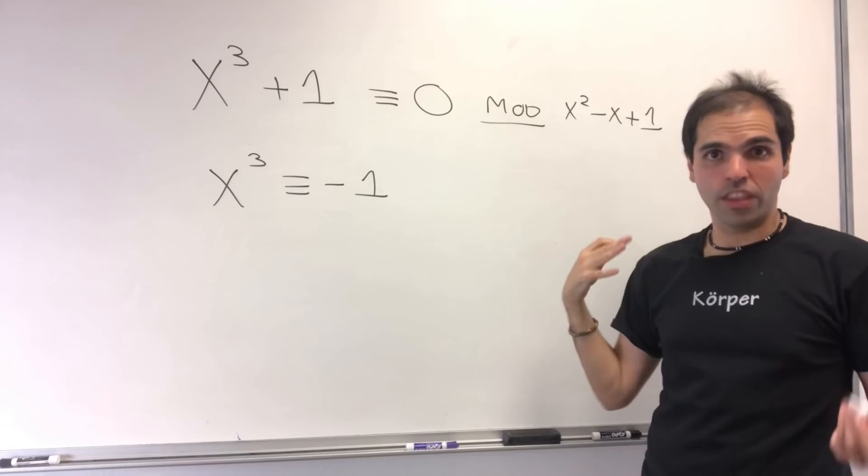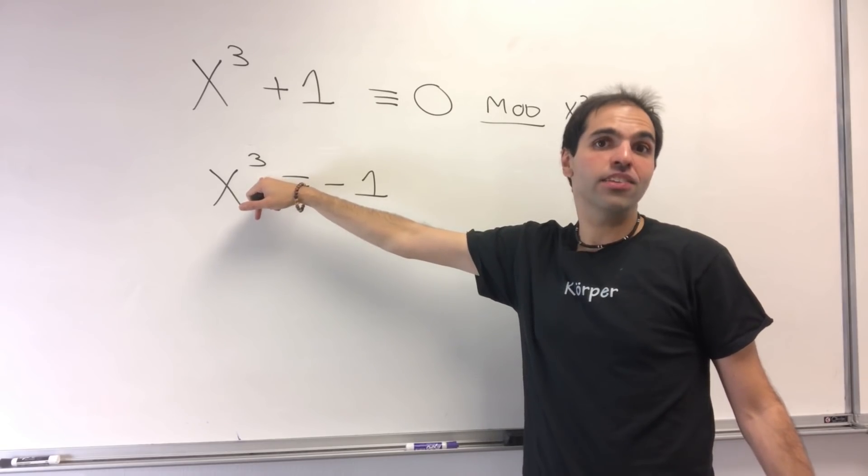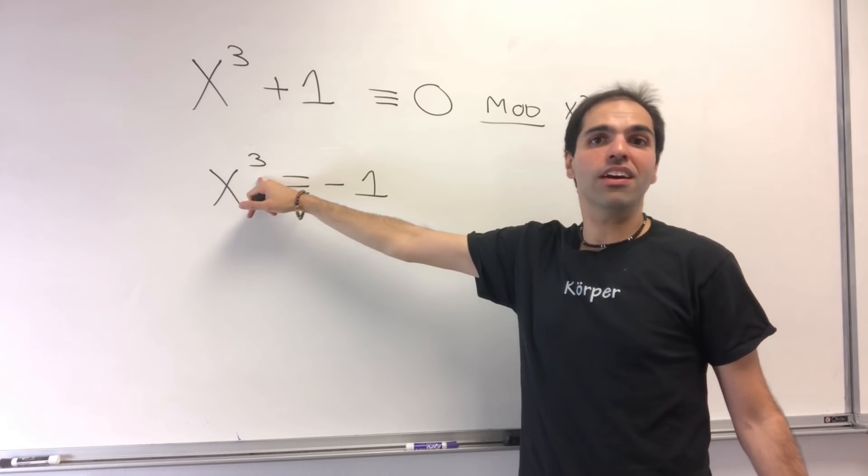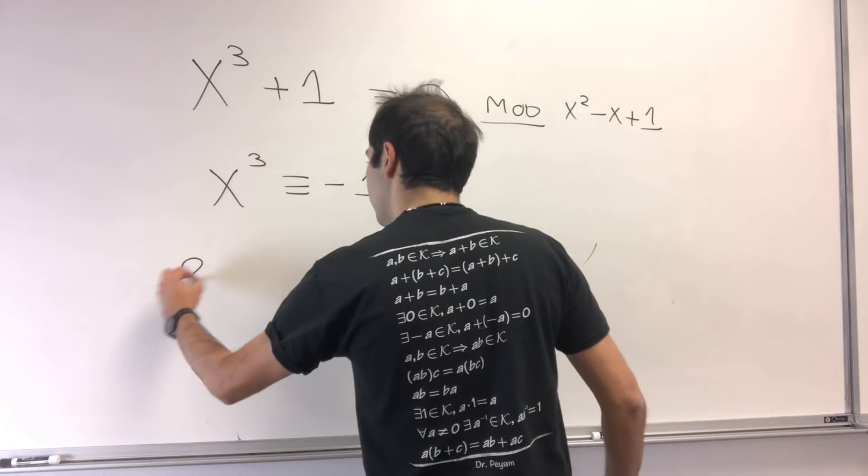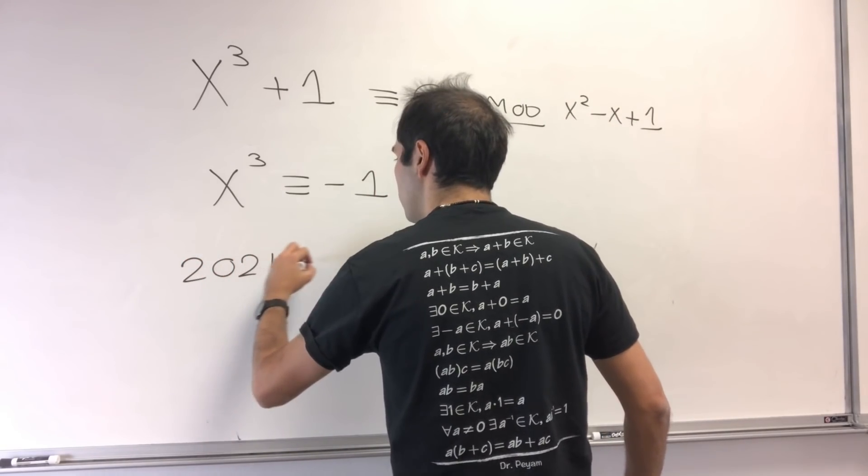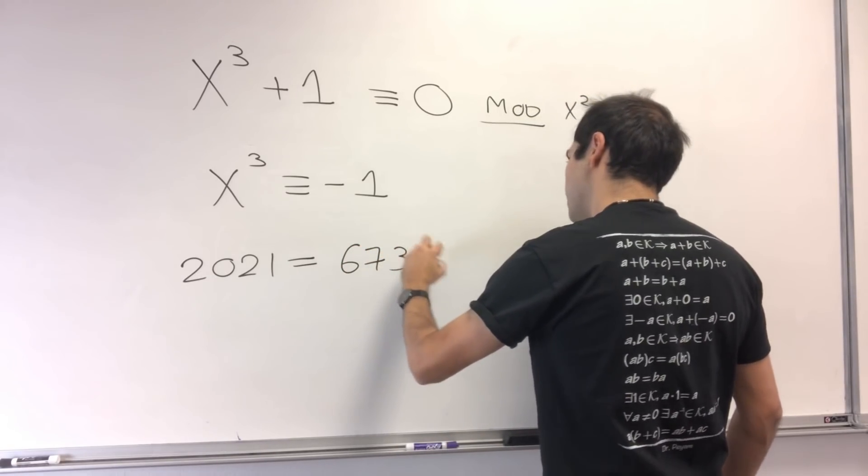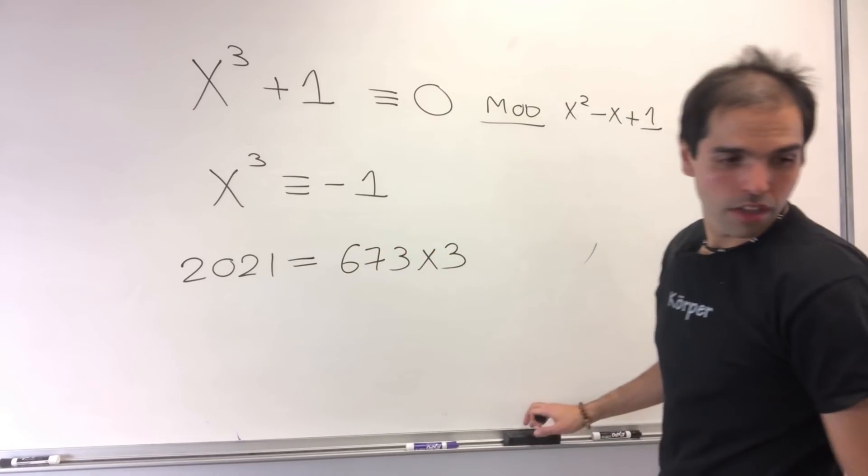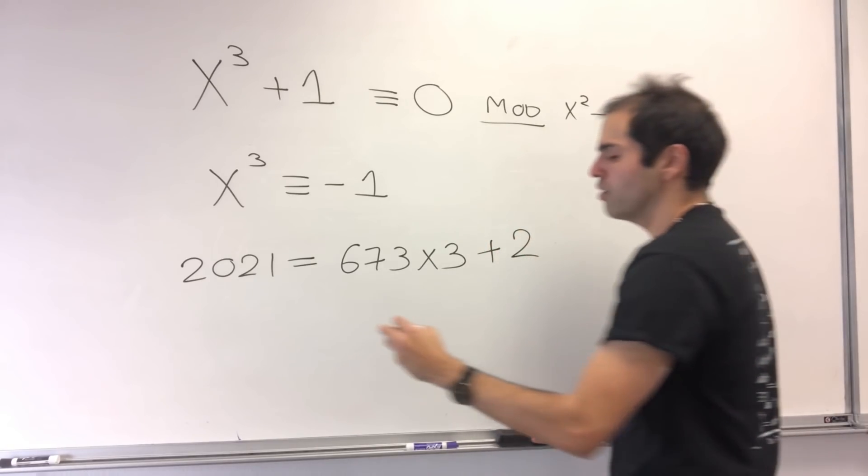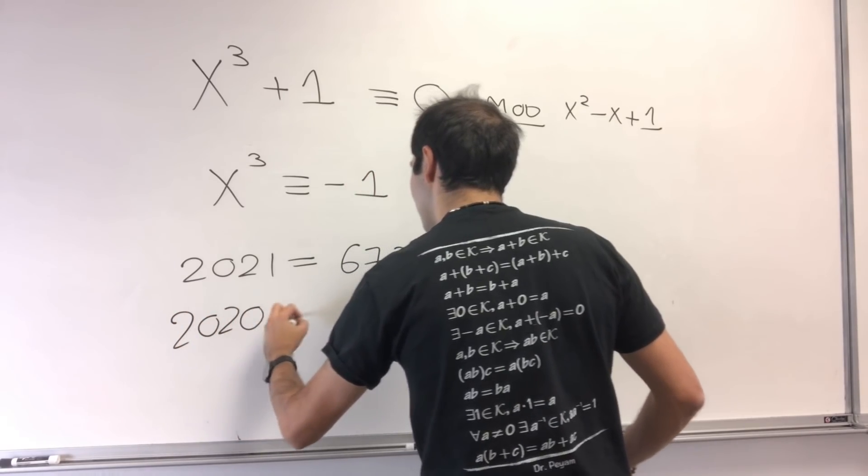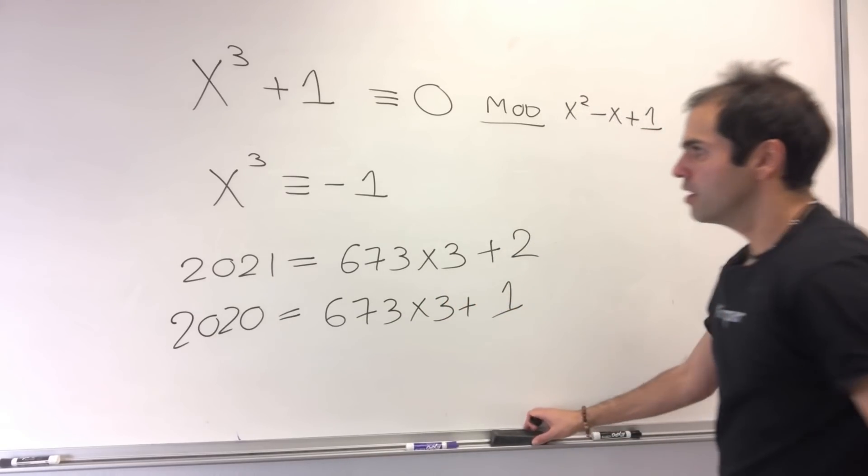Now, what does it have to do with our original equation? Well, let's see how we can extract 2020 and 2021 from this 3. Let's start with 2021. That is 673 times 3 plus 2. And 2020, it's the same thing, but plus 1. So, 673 times 3 plus 1.